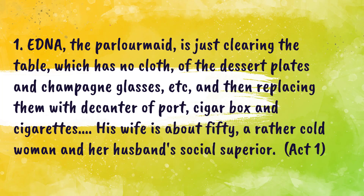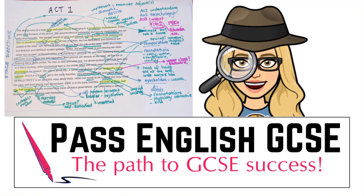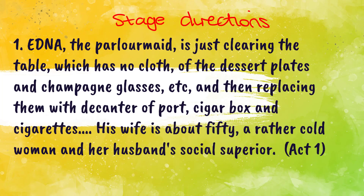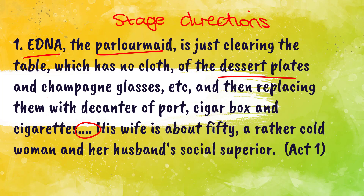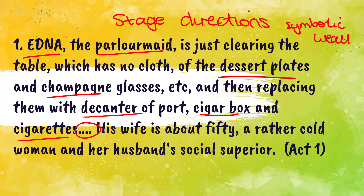Moving on to quote number one: I picked this from the opening stage directions. You'll have seen these annotated in my video on Act One. I chose to focus on Edna, who is really defined by her role. She's clearing the table of: no cloth, dessert plate, champagne glasses, decanter, port, cigar box, and cigarettes. These items are symbolic of wealth - they connote luxury.